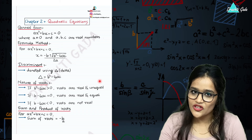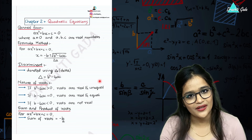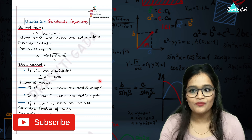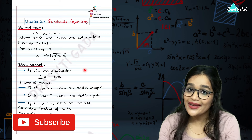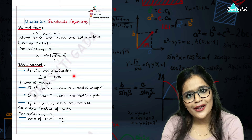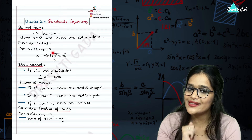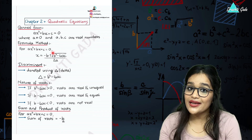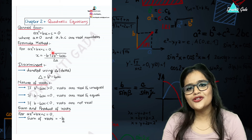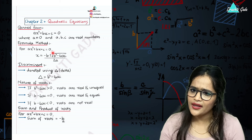The second thing is the factorization method — it is not a particular formula; the more you practice, the more easily you can solve it. Then comes the formula method. In the formula method, we have a formula to calculate the two roots: x is equal to minus b plus or minus square root of b squared minus 4ac, upon 2a. Whatever the question is, substitute the values of A, B, and C with their proper signs, including negative signs.